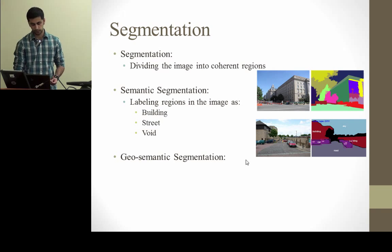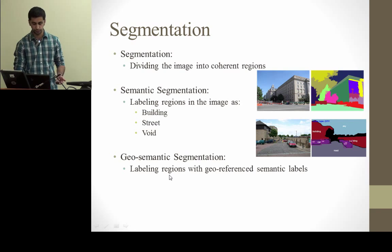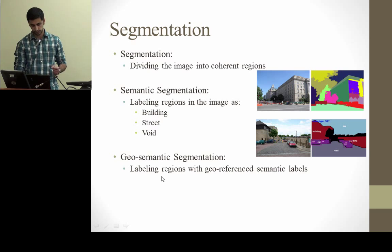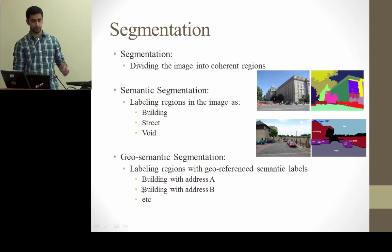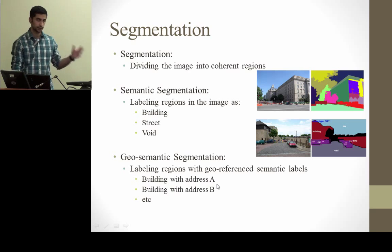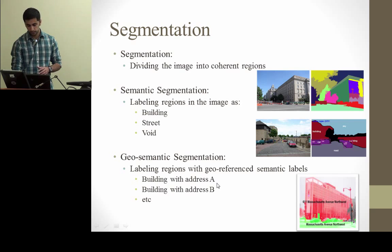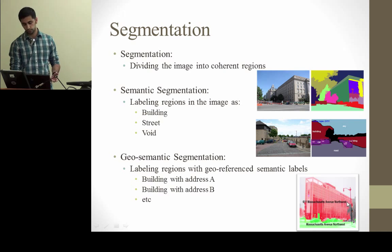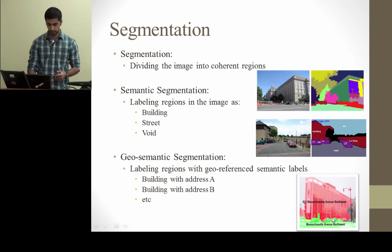Geosemantic segmentation is something we are introducing — we want to label regions with georeferenced semantic labels. Just labeling something as a building would not be sufficient; we want to say this is building A, this is building B, and associate geolocation and addresses to each of the semantic regions.